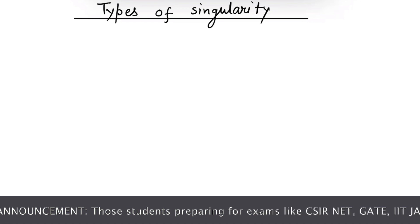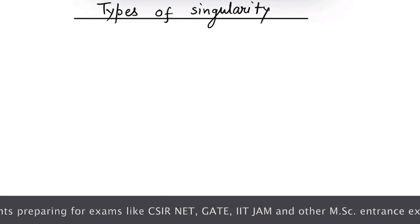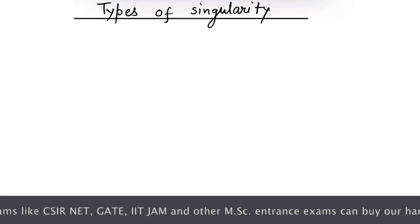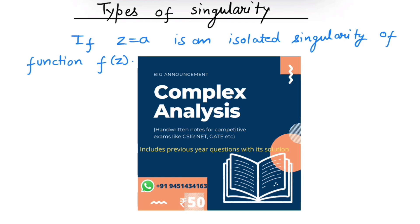If z equals to a is an isolated singularity of function f of z, then by definition of isolated singularity, there exists a deleted neighborhood of a in which function f of z is analytic. So we can have a Laurent expansion inside this neighborhood.